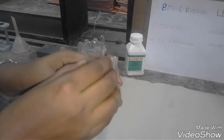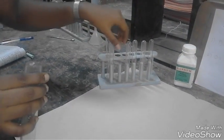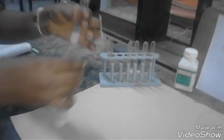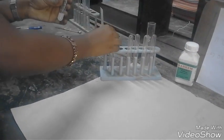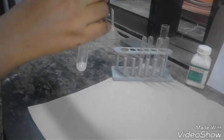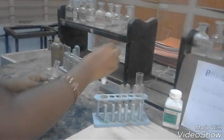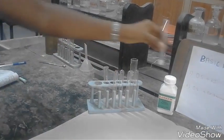Take the test tube now. Here I am going to do two confirmatory tests. The original solution is divided into two test tubes equally, but not more than half of the test tube.